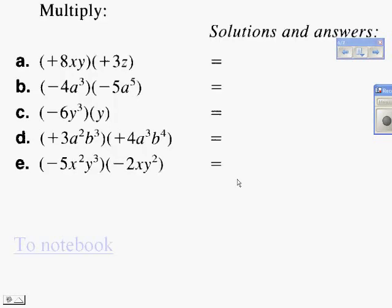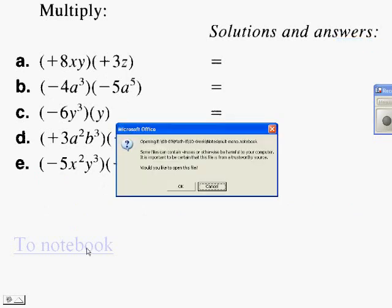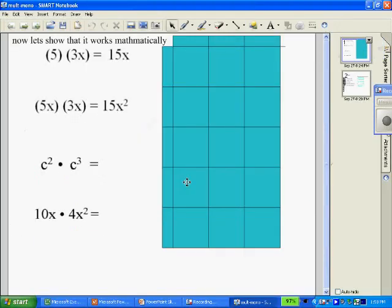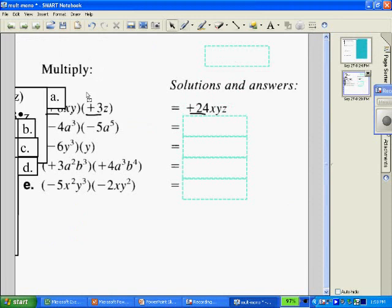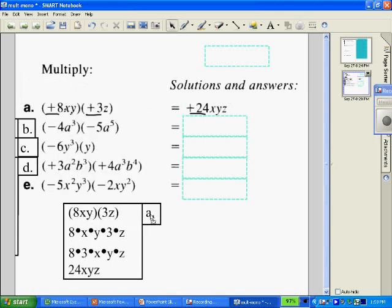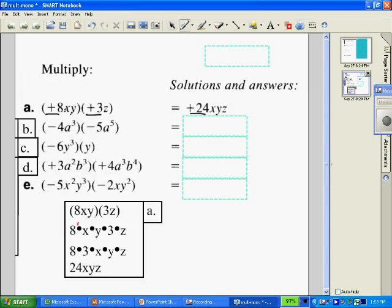So these were the problems we practiced in class. Let's go to the notebook and check our answers — the majority of people were doing pretty well. Our first answer is 24xyz. We did 8 times 3 and came up with 24, and then you have x times y times z — one factor of each. Here is our work that shows it works: you rewrite all the indicated multiplication, use the commutative property to put your coefficients together, answer that, and here are the other factors you have left.